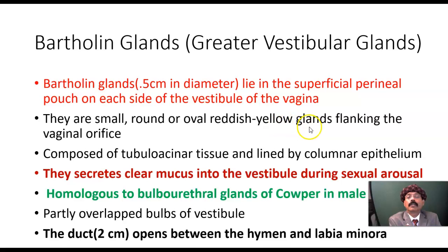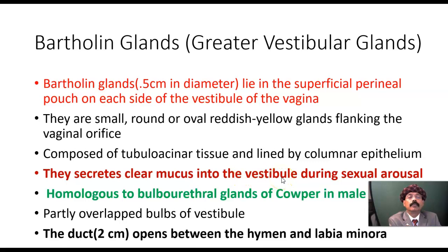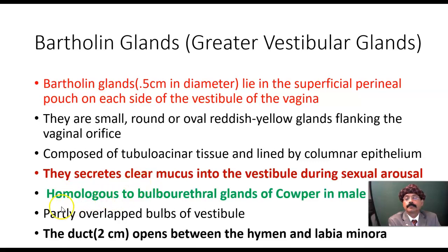They are small, round or oval, reddish-yellow glands flanking the vaginal orifice. They are composed of tubular acinar tissue and lined by columnar epithelium. They secrete clear or whitish mucus into the vestibule during sexual arousal. The Bartholin glands are homologous to the bulbourethral gland of Cowper in males. Their secretion lubricates the genital passage and they are partly overlapped by the bulbs of the vestibule.